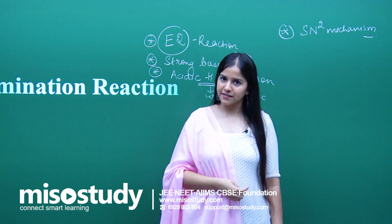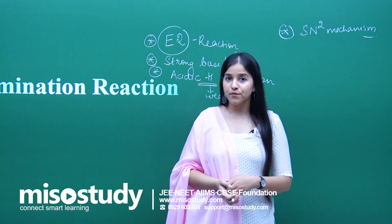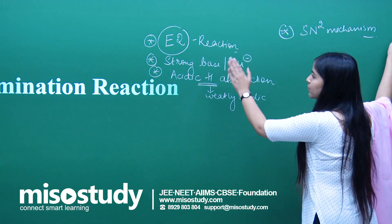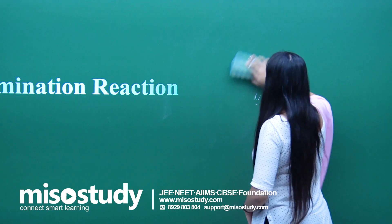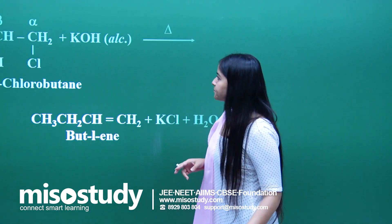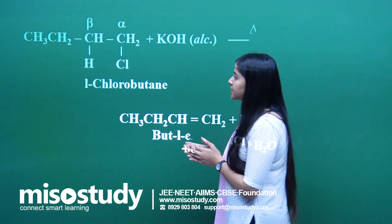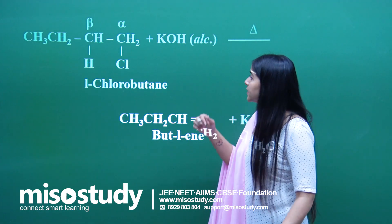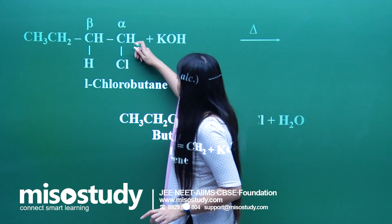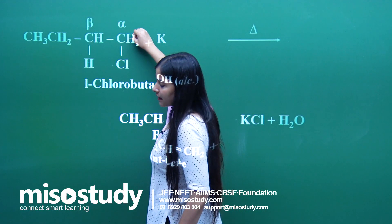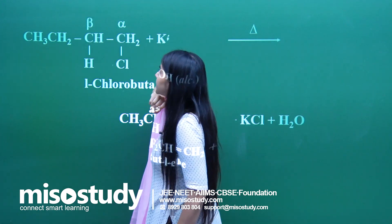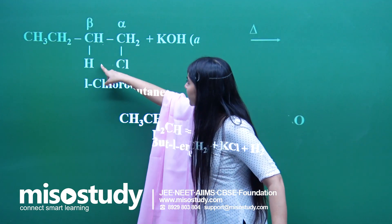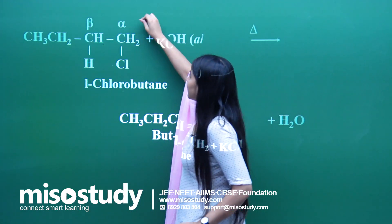So that is what beta elimination is, and the Zaitsev rule plays a very important role in the product formation. Now, how do you perform this reaction? Here is a simple example using alkyl halides. Beta elimination occurs mostly in the case of alkyl halides. The halide is attached to the alpha carbon, and adjacent to that is the beta carbon, and the hydrogens associated with it are the beta hydrogens.